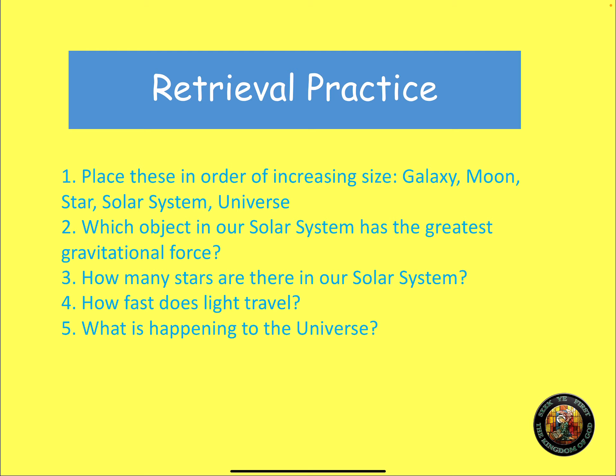Number two, which object in our solar system has the greatest gravitational force? Well, that would be the largest object in our solar system, which happens to be the sun. Number three, how many stars are there in our solar system? Well, we have one and we call it the sun.